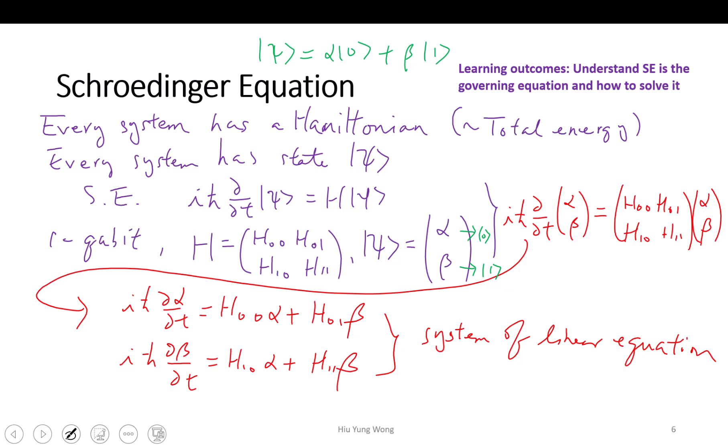So now we don't need to think about what is the basis. We just need to look at the coefficient. Using this, solving this system of linear equation, I will know under this Hamiltonian—this Hamiltonian can be the magnetic field, external magnetic field, plus some potential or whatever kinetic energy—and it tells us how alpha and beta changes as a function of time.